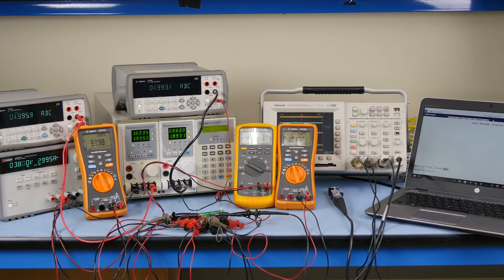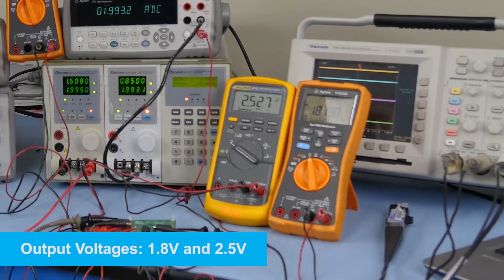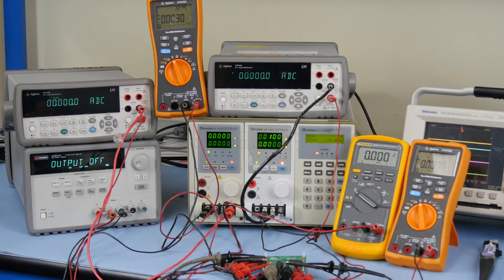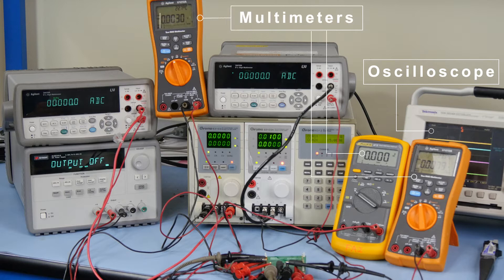By using MPS standard evaluation board, we configure the output voltages to be 1.8V and 2.5V. Equipment for this evaluation include an oscilloscope, multimeters, a power supply, and an electronic load.